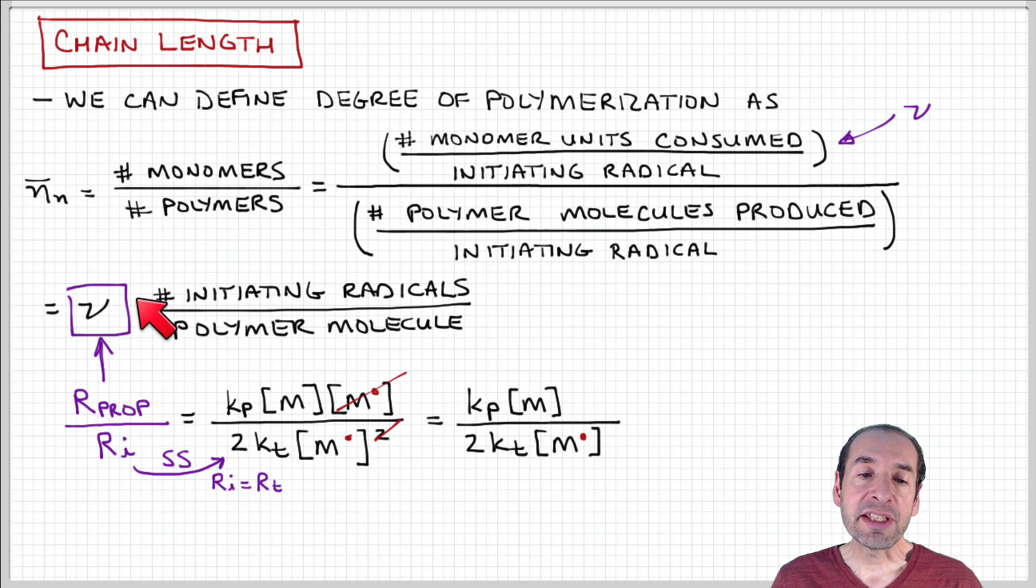Now that I've done this, let's take a closer look at this term ν. Notice that this is the monomer units consumed per initiating radical.